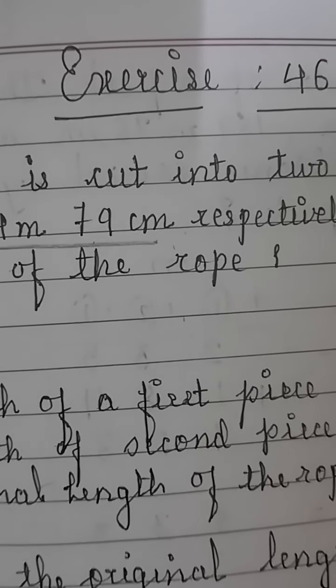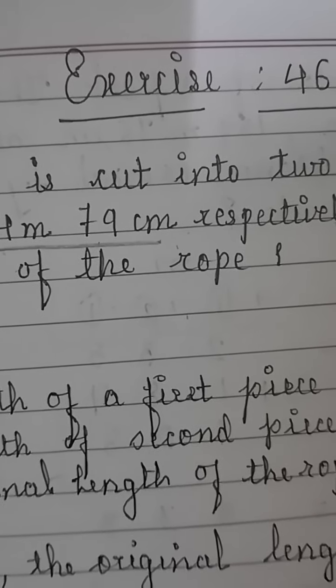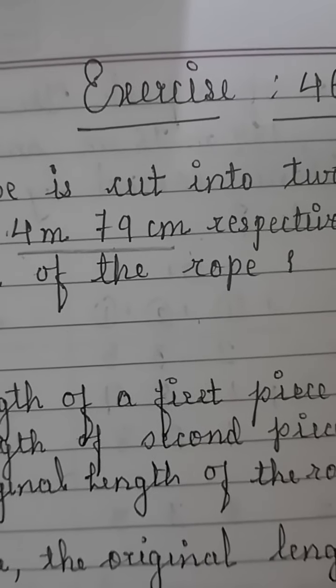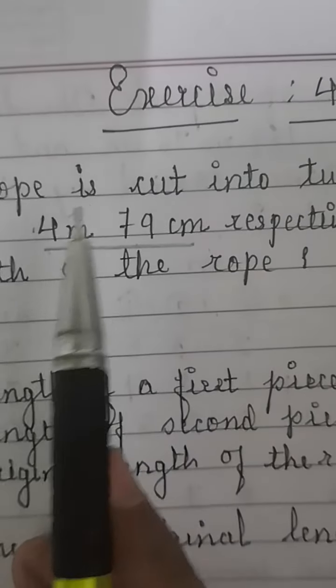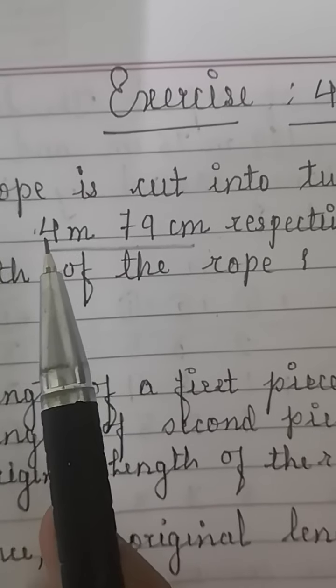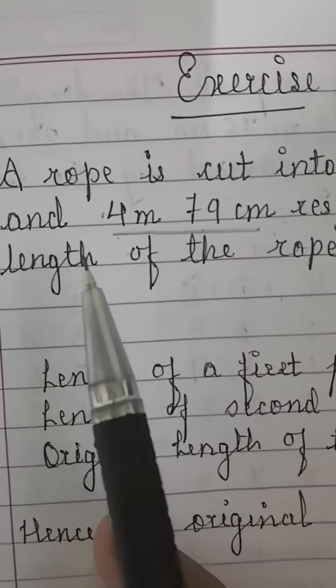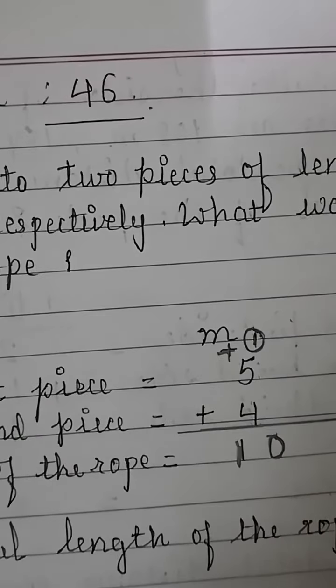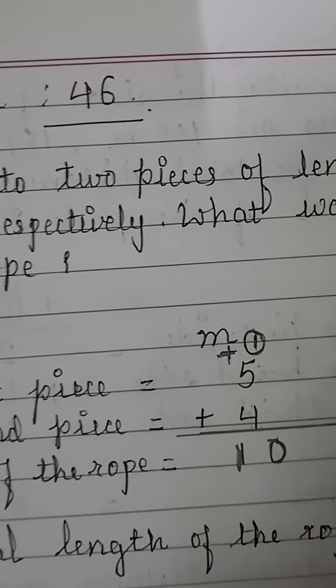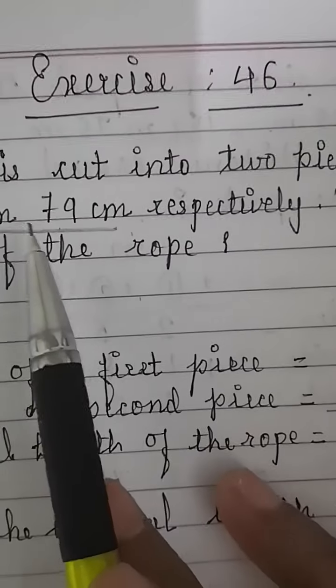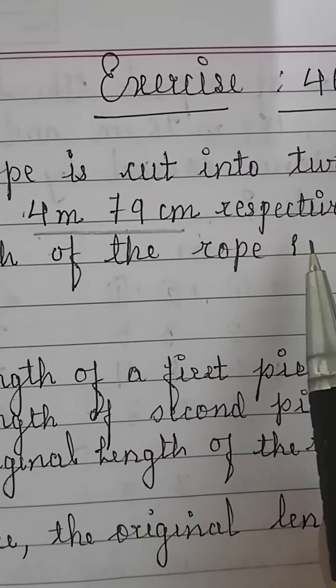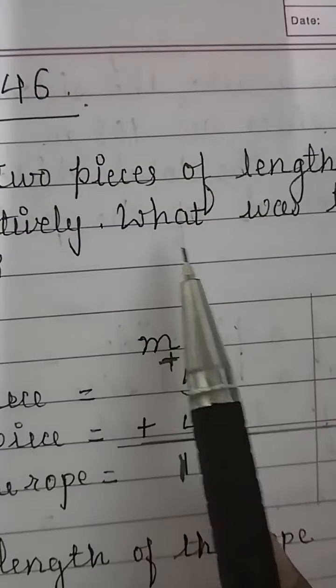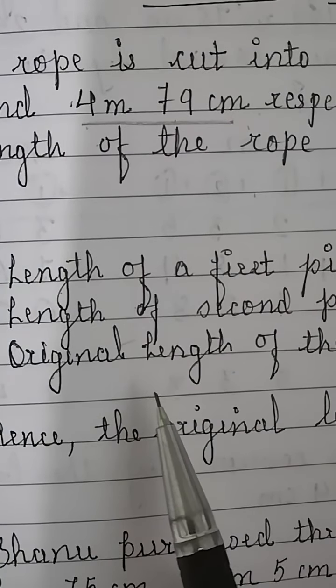Hello dear children, today we are going to solve word problems based on measurement of length. Exercise 4.6, Problem A: A rope is cut into two pieces of lengths 5 meter 36 centimeter and 4 meter 79 centimeter respectively. What was the original length of the rope?